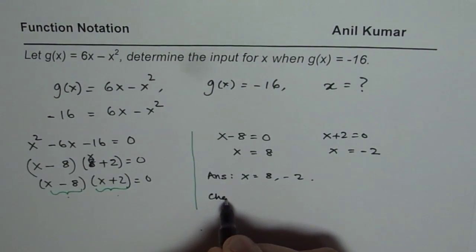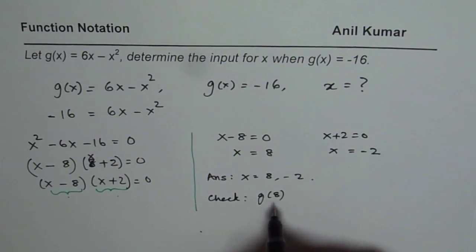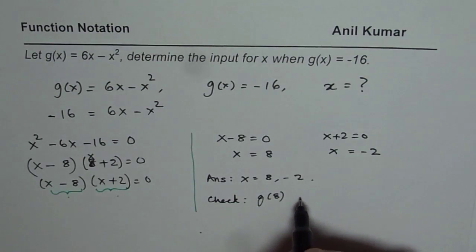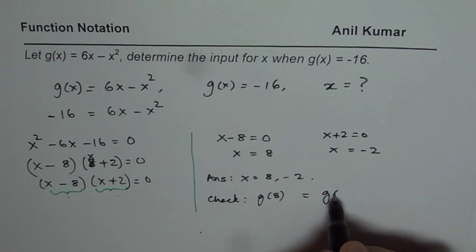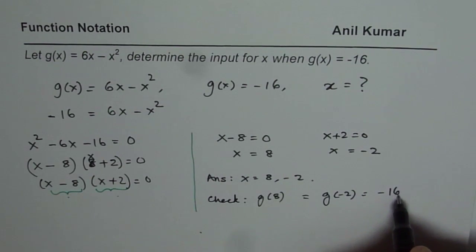You can check your answer. How to check? You find the value of g(8). Substitute 8 here and see whether you get minus 16 or not. You will find this to be equal to g(minus 2), and both will be equal to minus 16. That is the way you could actually check it.